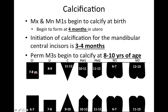Moving on to calcification: maxillary and mandibular first molars begin to calcify at birth. Remember, they begin to form at four months in utero. Initiation of calcification for the mandibular central incisors is three to four months. So first molars calcify at birth, and mandibular central incisors calcify at three to four months.